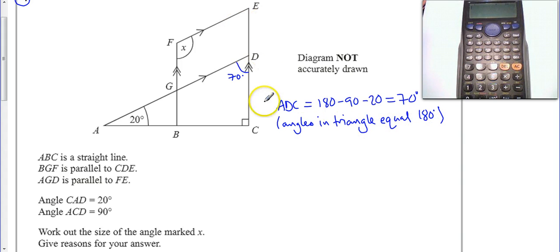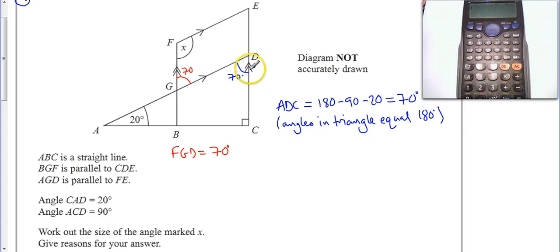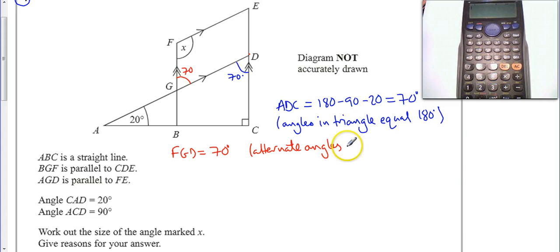Then I'm just going to switch colours. I'm going to work out angle FGD — from F to G to D, so this angle in here. I know that FGD is equal to 70 degrees, and the reason I know this is because we've got parallel lines here, and so — I have to use the words here — alternate angles are equal.